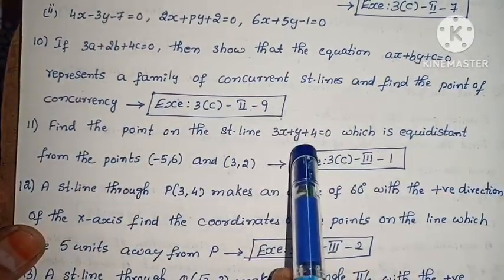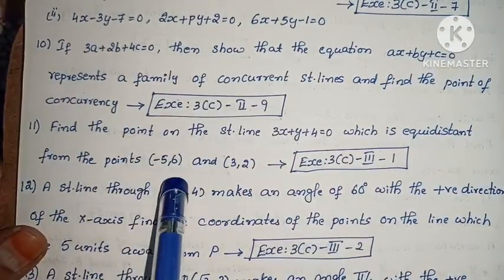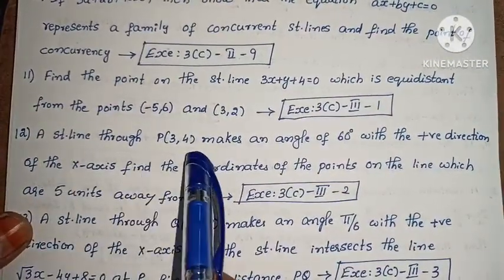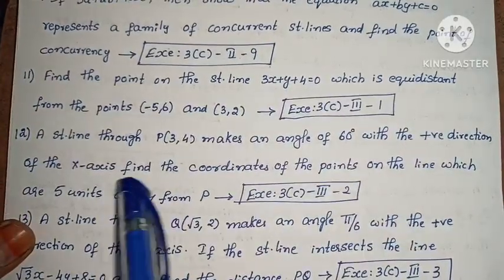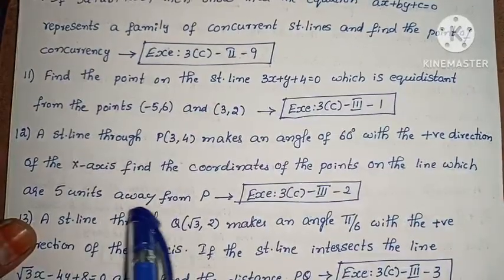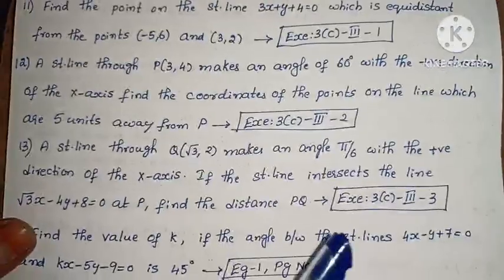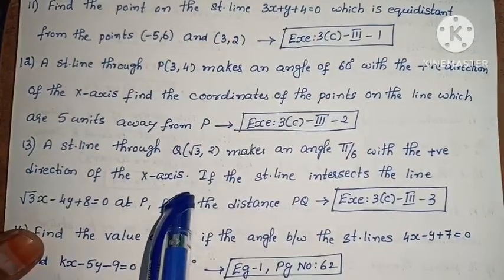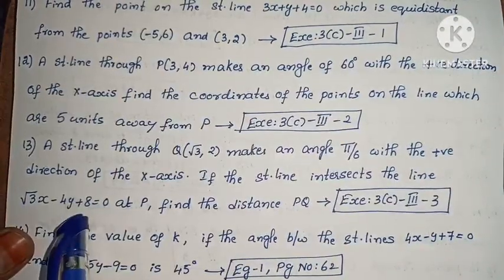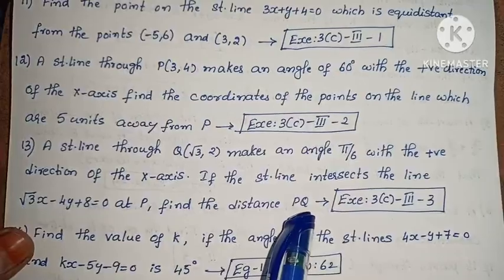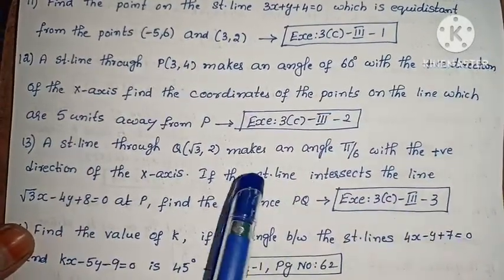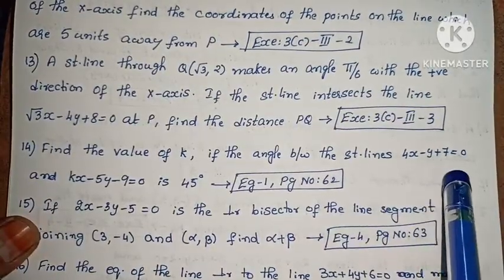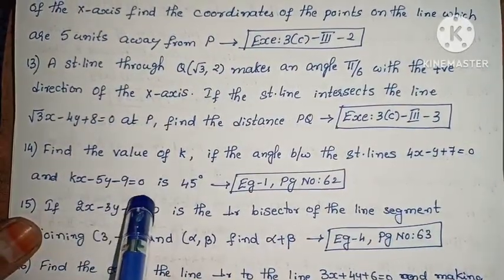Next, find the point on the straight line 3x plus 5y plus 4 equals to 0 which is equidistant from the points (-5, 6) and (3, 2). Next, a straight line through P(3, 4) makes an angle 60 degrees with the positive direction of the x-axis; find the coordinates of the points on the line which are 5 units away from P. Next, a straight line through Q(root 3, 2) makes an angle pi/6 with the positive direction of the x-axis. If the straight line intersects the line root 3x minus 4y plus 8 equals to 0 at P, find the distance PQ. Next, find the value of k if the angle between the straight lines 4x minus 5y plus 7 equals to 0 and kx minus 5y minus 9 equals to 0 is 45 degrees.